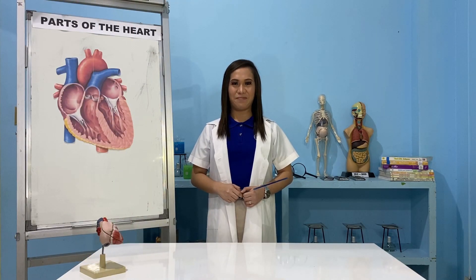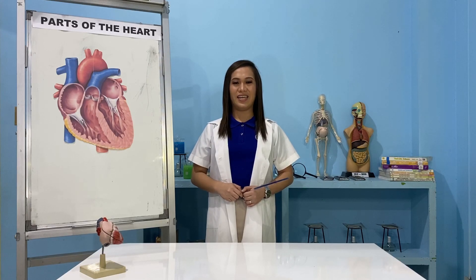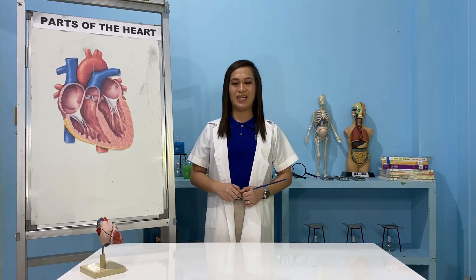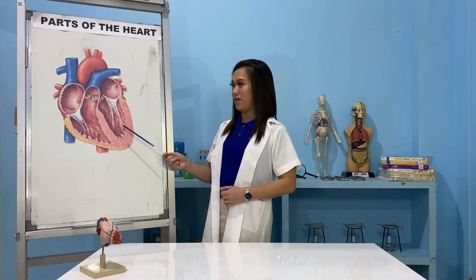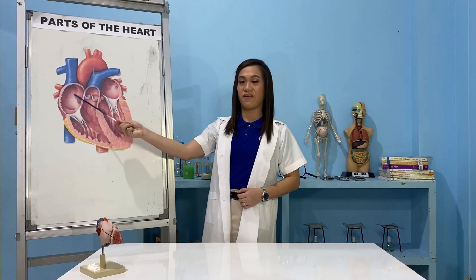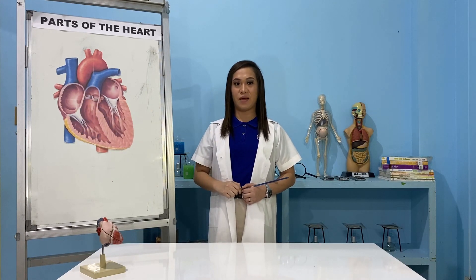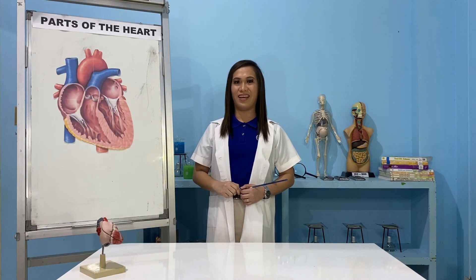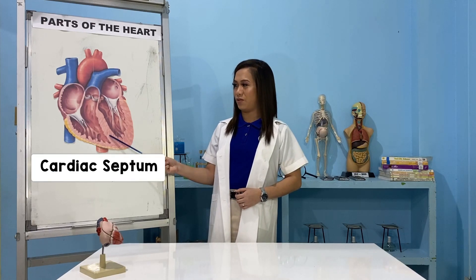To understand it better, we need to learn the parts and functions of the heart. In anatomy, remember that you are always looking at someone else's body. So in our diagram, this will be the left side, and this is the right side of the heart. Both sides are separated by a thick wall of muscle called the cardiac septum.